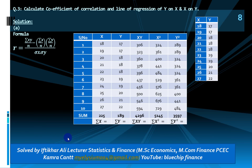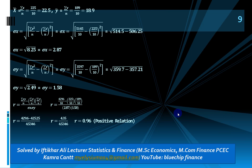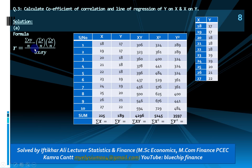Question 3: calculate the coefficient of correlation and lines of regression of y on x and x on y. We need five calculations: sum of x, sum of y, sum of xy, sum of x squared, and sum of y squared. All calculations are given here. The correlation coefficient formula is: [sum of xy / n − (sum of x / n)(sum of y / n)] divided by (standard deviation of x × standard deviation of y).